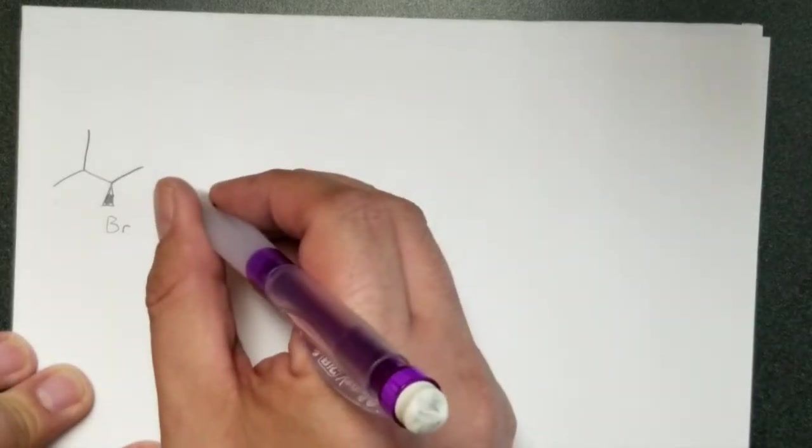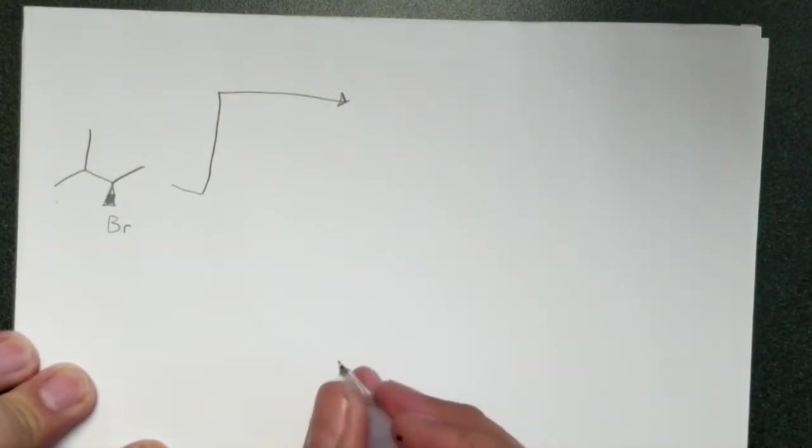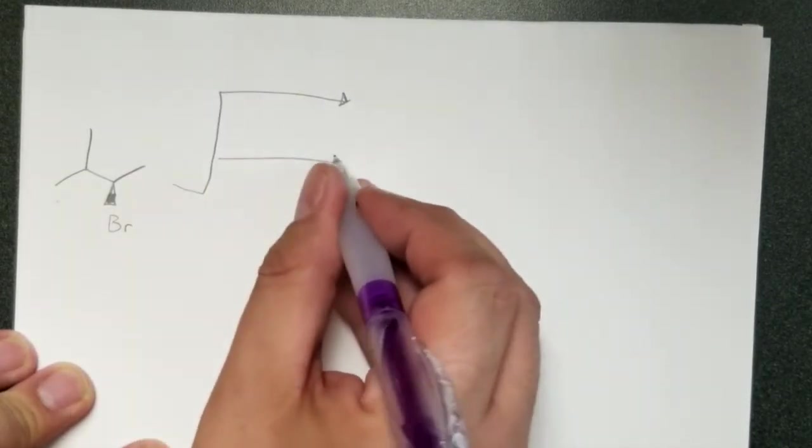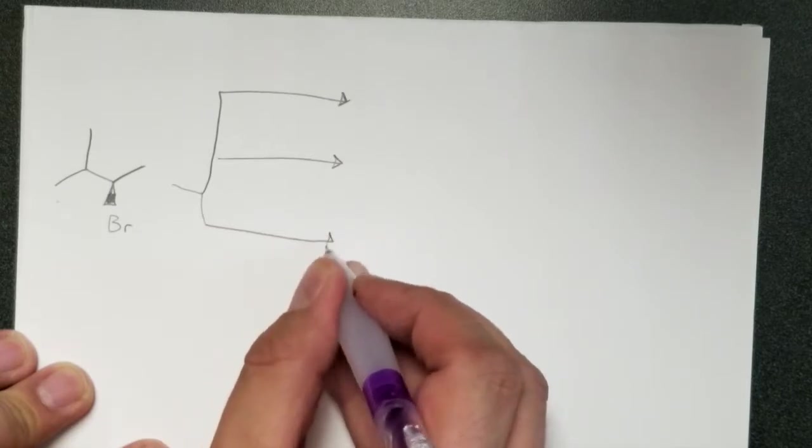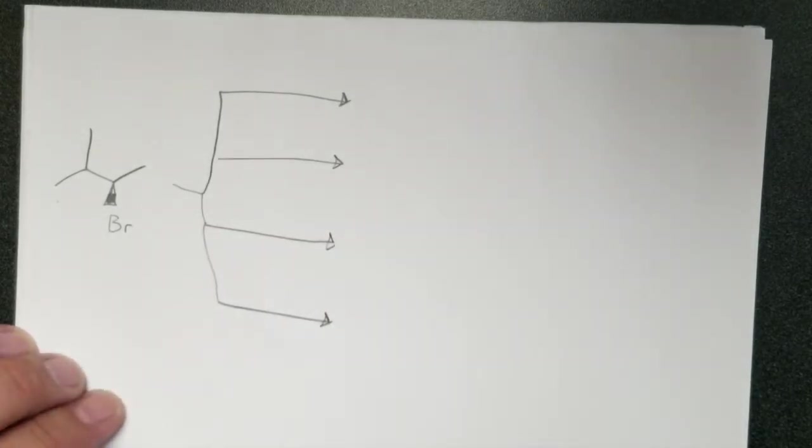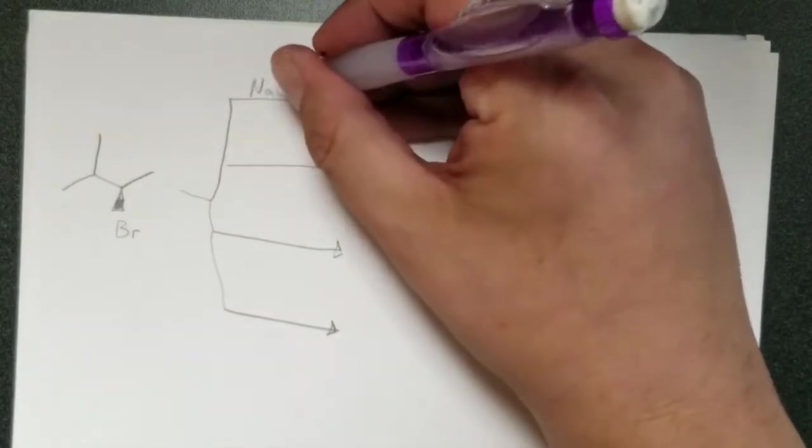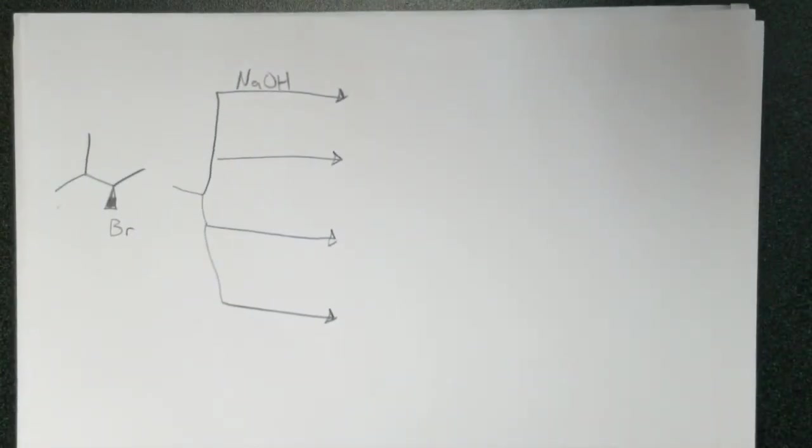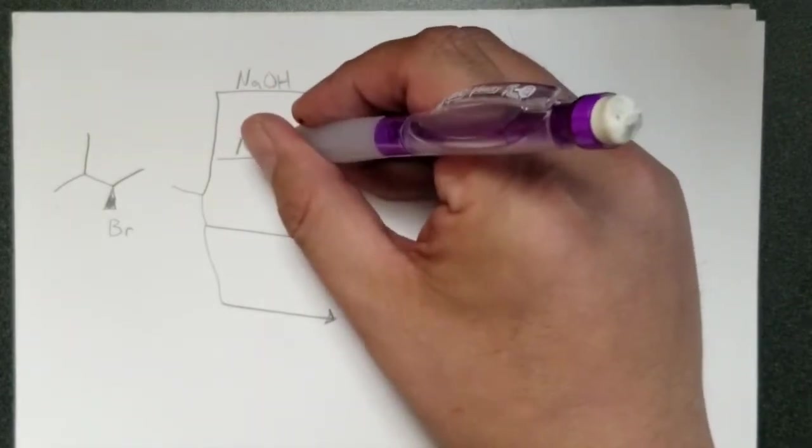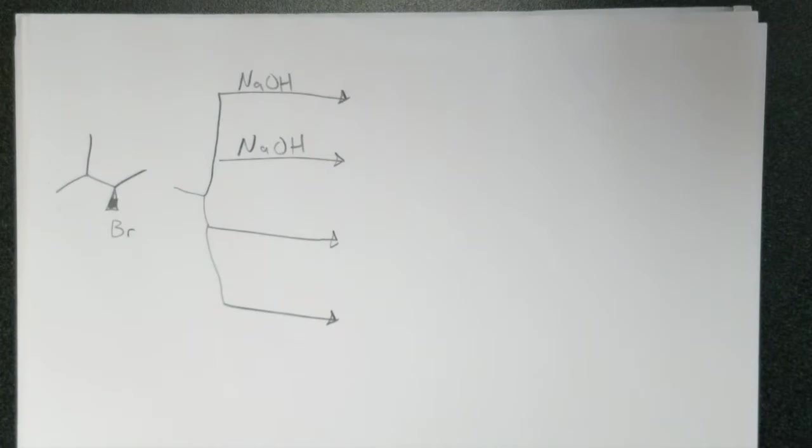So here we have our bromine leaving group. And I have a couple different reagents we're going to use. So let's go ahead and say we have four options total. So I think let's just go ahead and say NaOH. So we're going to show two different situations for what NaOH can do.